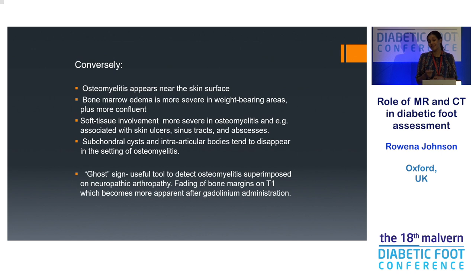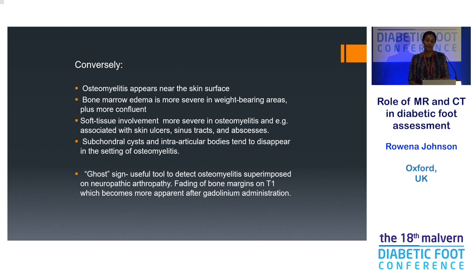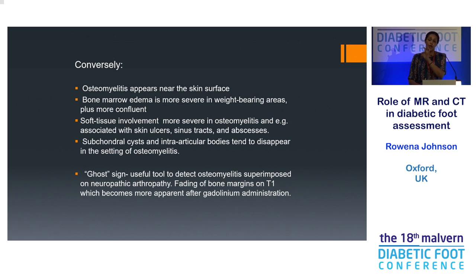The ghost sign — this is when gadolinium is useful, specifically when trying to differentiate a Charcot foot with superimposed osteomyelitis. We give gadolinium only to T1 sequences with fat saturation. Your pre-gadolinium scan is a fat-sat T1 where everything is dark — fluid, fat — and you give gadolinium and look for anything to light up. If there is a superimposed infection on a Charcot, on the first scan when everything is dark you can't see the cortex; it looks blurry. But when you give gadolinium, the cortex suddenly appears — that's the ghost sign. You can't see it before gadolinium, and then it suddenly appears after.